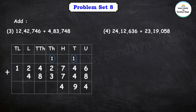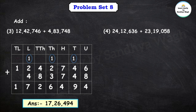2 plus 3 is 5, plus the carried 1 is 6. Now 4 plus 8 is 12, so we write 2 and carry 1 to the lakhs place. 2 plus 4 is 6, plus the carried 1 is 7. And 1 stays as is. So our final answer is 17,26,494.